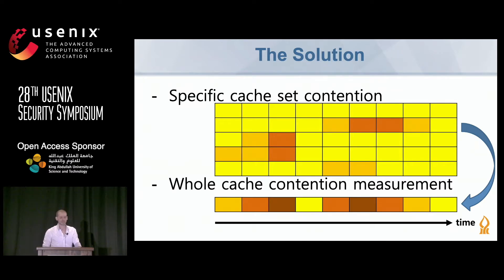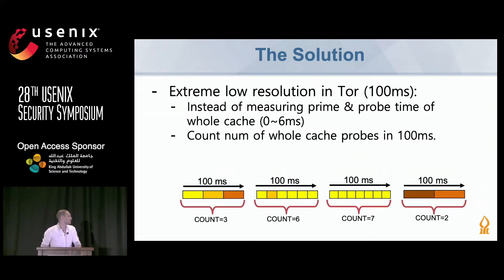So what did we do? Instead of measuring cache contention on each cache set as previous work did, we measured contention over the whole last-level cache over time. This gave us slightly lower resolution of prime and probe, but allowed us to extract useful insights from the traces for our model. For the extreme 100-millisecond Tor resolution, instead of measuring a single prime-and-probe of the whole cache, we counted the number of whole-cache probes within 100 milliseconds, giving us a more accurate effective timer resolution.